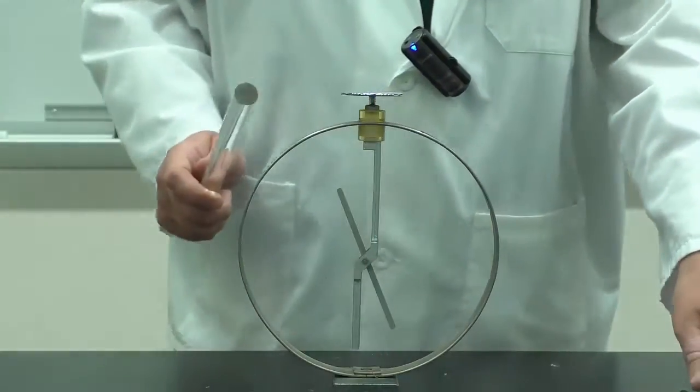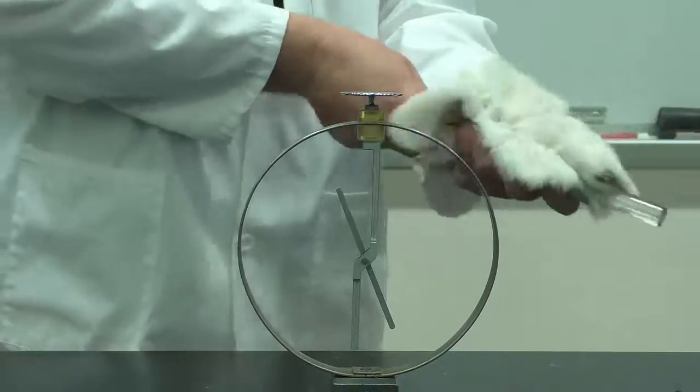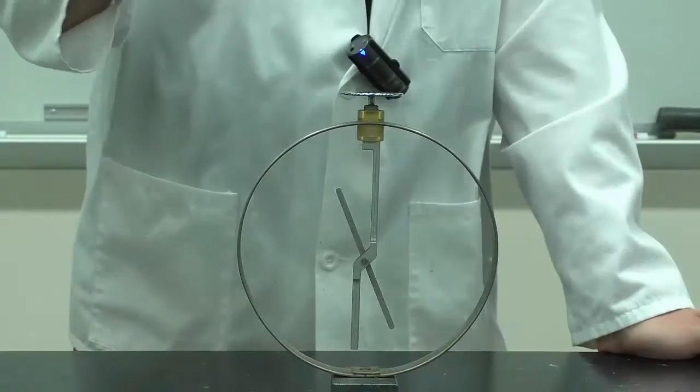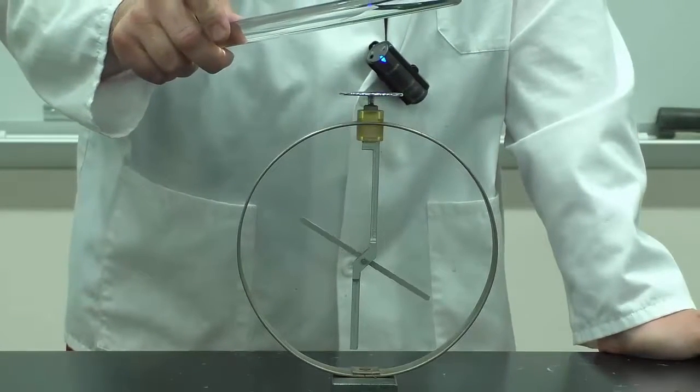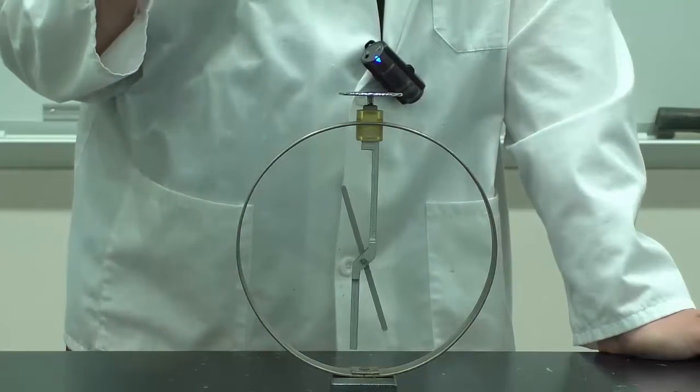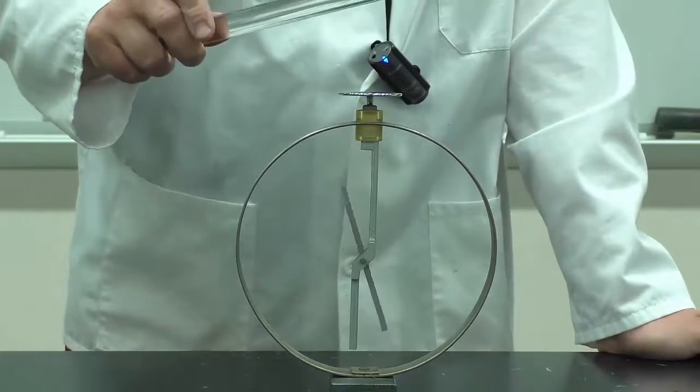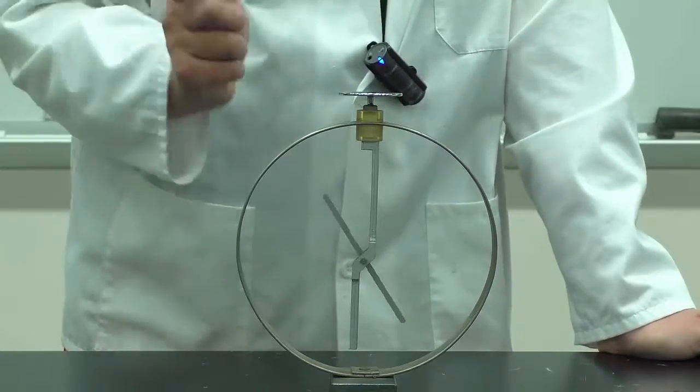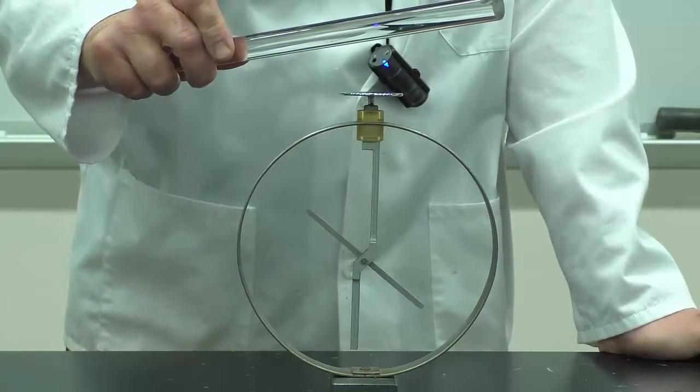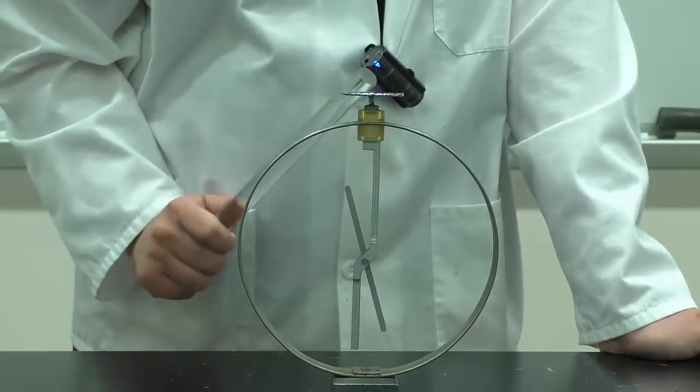If I were to take the glass rod and rub it with the fur, that'll charge the glass rod positively. If I bring it near the positively charged electroscope, the needle moves even further because now I have more positive charge entering the system and so the positive charges from the glass rod and the electroscope want to repel each other.